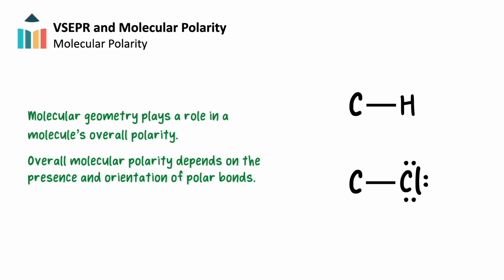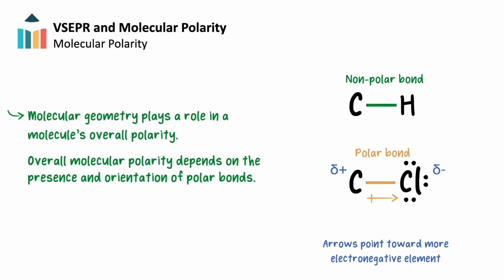Molecular geometry will play a large role in a molecule's overall polarity, and as a result, how it interacts with other compounds. Within a covalent compound, its bonds are classified as polar or nonpolar based on their differences in electronegativity. Polar bonds create partial positive and negative charges, called bond dipoles. We can represent these dipoles with an arrow pointed toward the more electronegative element, with a notch added to the opposite side of the arrowhead, noting the partially positive side of the bond.